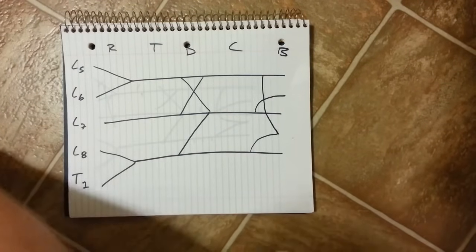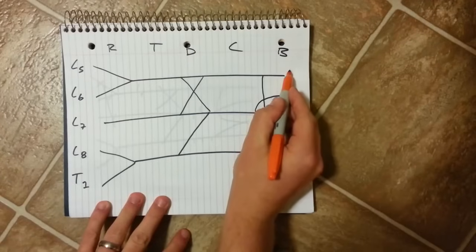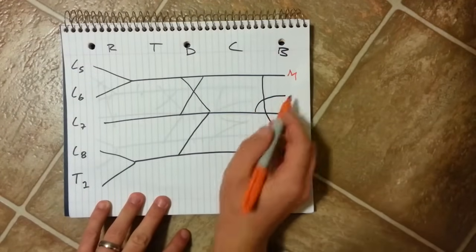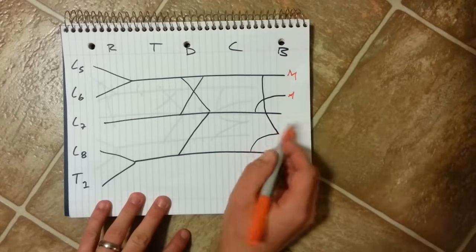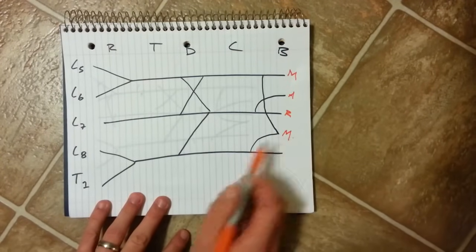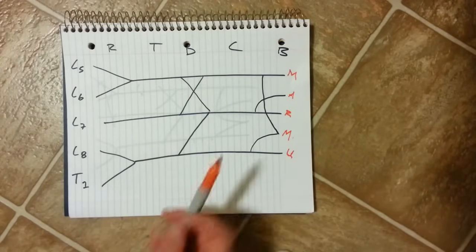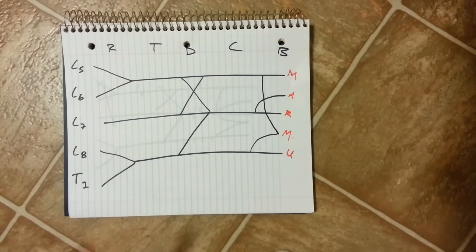Along the right side here I use the acronym of MARMU, M which is musculocutaneous, A which is axillary, R which is radial, M which is median, and U which is ulnar. And these are those final branches coming off the brachial plexus.